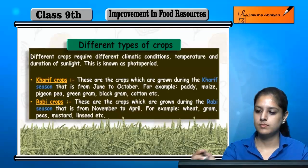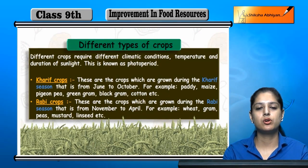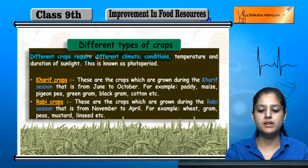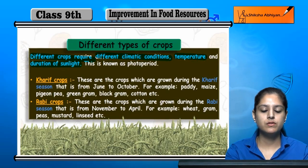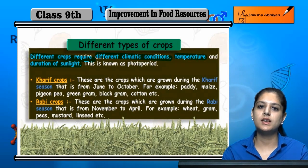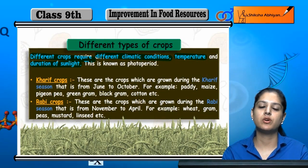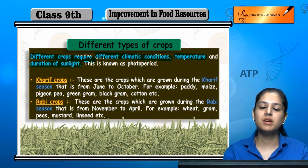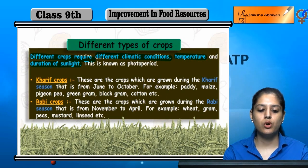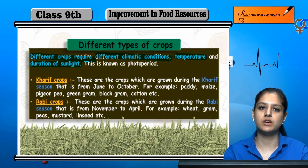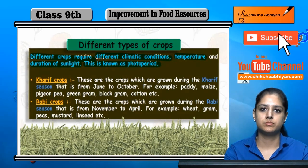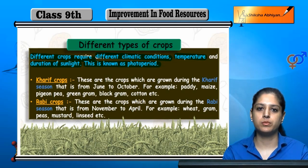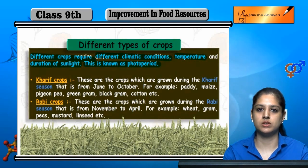Different types of crops require different climate conditions, temperature, and duration of sunlight. Every crop is different — climate is different, temperature is different, and the amount of sunlight is also different for different crops. This duration of sunlight is called the photo period, and each crop has a different photo period.